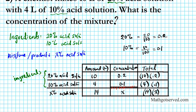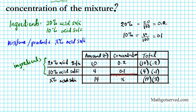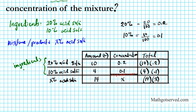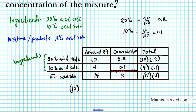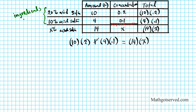Now, to generate our equation, we're going to add the totals. Remember, you can add the Amount and the Total, but not the Concentration. So I'm going to add the first ingredient total plus the second ingredient total, and that equals the mixture total. So: 10 times 0.2, plus 4 times 0.1, equals 14 times x. That gives us 2.4 equals 14 times x.